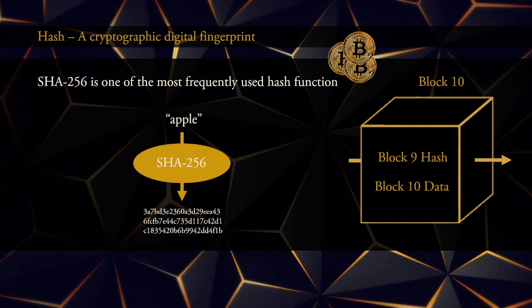Each hexadecimal digit is one of 0 through 9, or A through F. Do not worry if this seems confusing — while I'm being a little bit technical here, you can think about a hash function in a very simple way. Every text string has a digital fingerprint, also called a hash, and a hash function is simply something that can tell you what that fingerprint is.